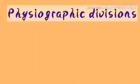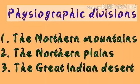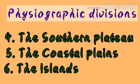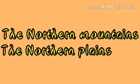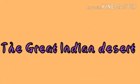What are the six Physiographic Divisions? They are the Northern Mountains, the Northern Plains, the Great Indian Desert, the Southern Plateau, the Coastal Plains, and the Islands. In the previous video, we discussed the Northern Mountains and the Northern Plains. Now we will see the Great Indian Desert.